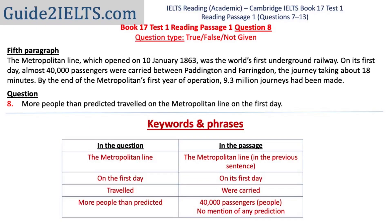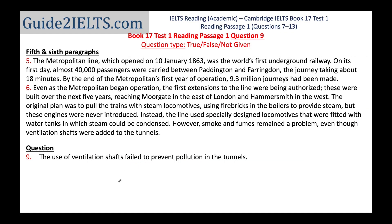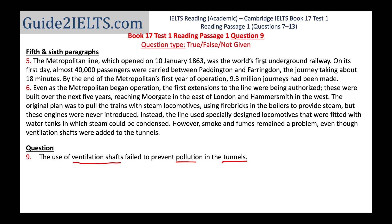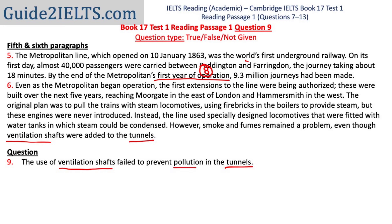On screen you can see a list of words and phrases that help confirm the answer. In the ninth question, there are no capitalized words or numbers, but there are words like 'ventilation,' 'pollution,' and 'tunnels.' I expect to find at least some of these words as-is in the passage. Scanning, I find both 'ventilation shafts' and 'tunnels' mentioned at the end of the next paragraph. This shows why it's important to get a tentative location before diving into the details. The answer to questions 7 and 8 was in the fifth paragraph, but question 9's answer is at the end of the sixth paragraph.